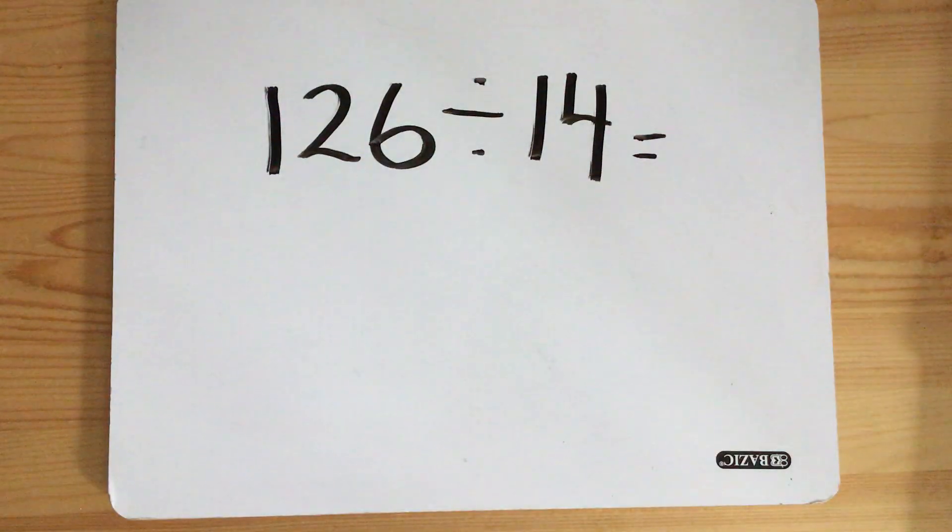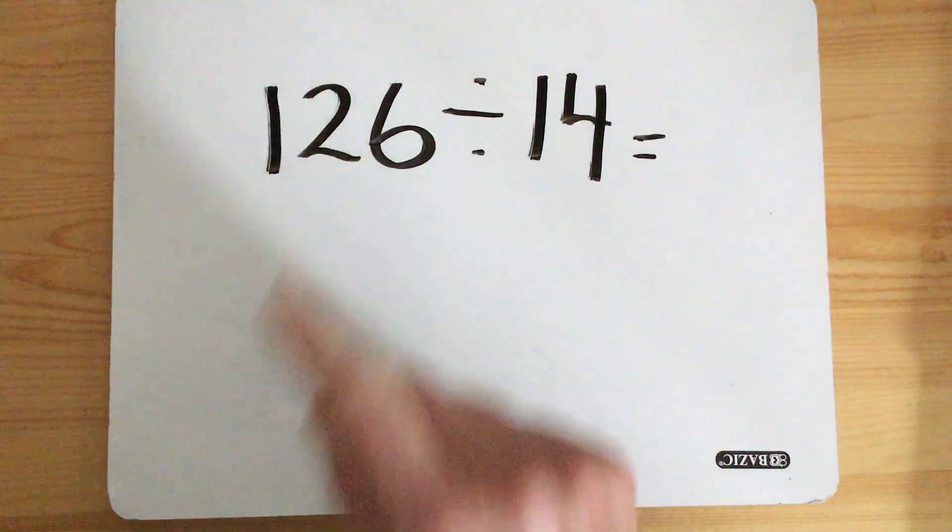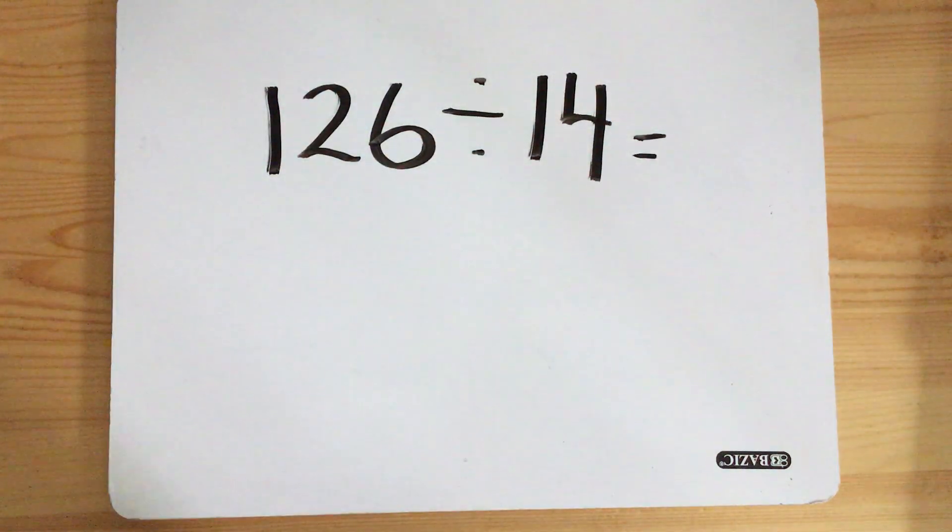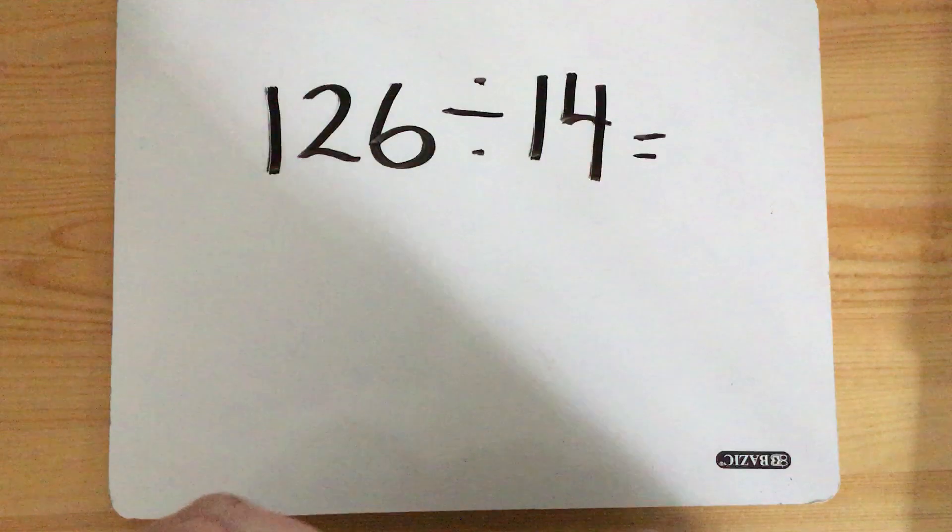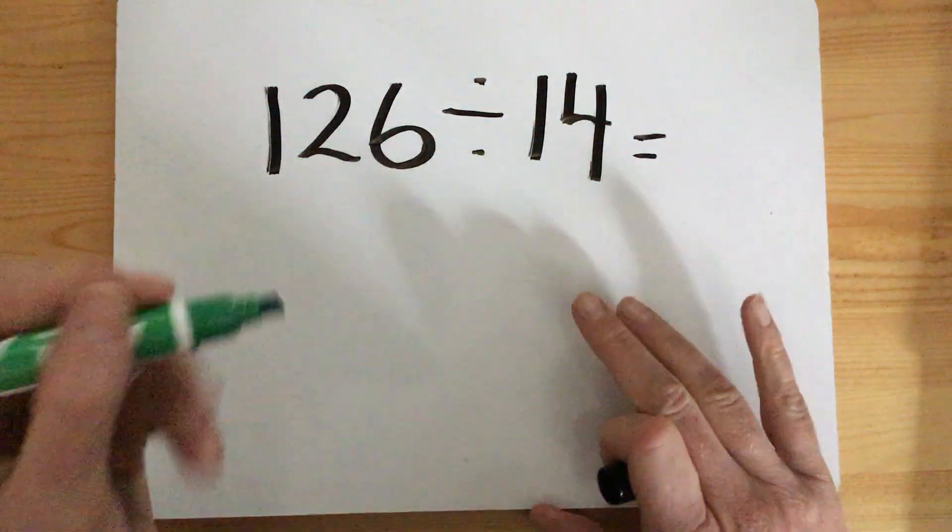So you ask yourself, first of all, are both those numbers even? Yes, they are. So what we do is we halve it. We ask ourselves, and we mentally do this in our head, what is half of 126? What plus what equals 126? Well, the answer is, I'm just going to go to a different color, 63.